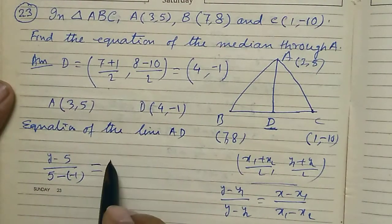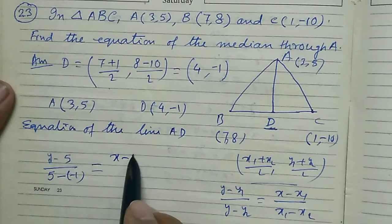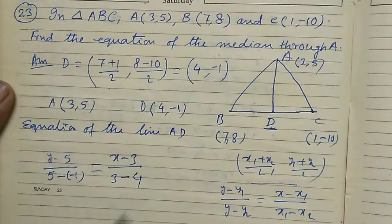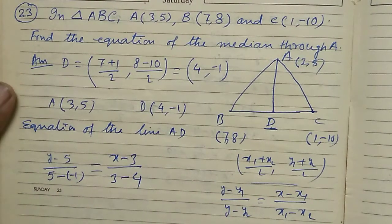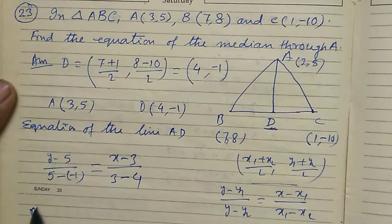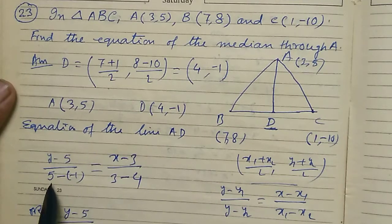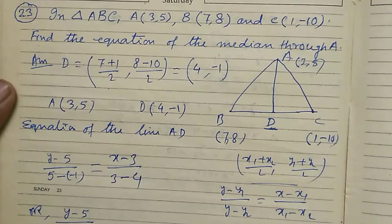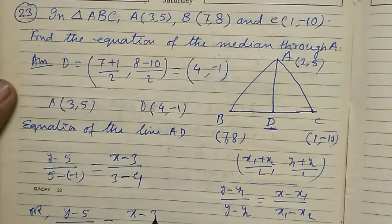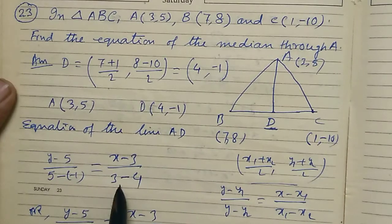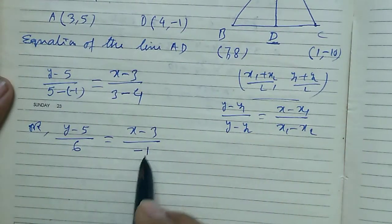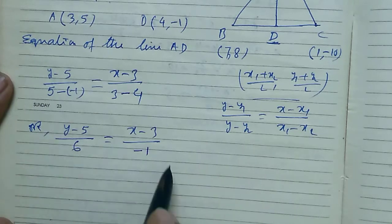This equals X minus X1 by X1 minus X2, that's X minus 3 by 3 minus 4. Then we cross multiply.